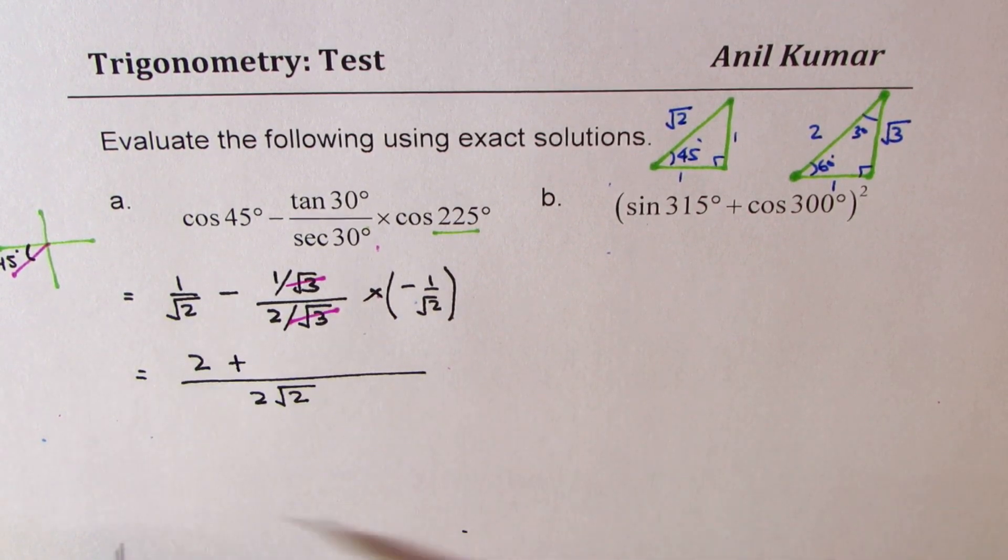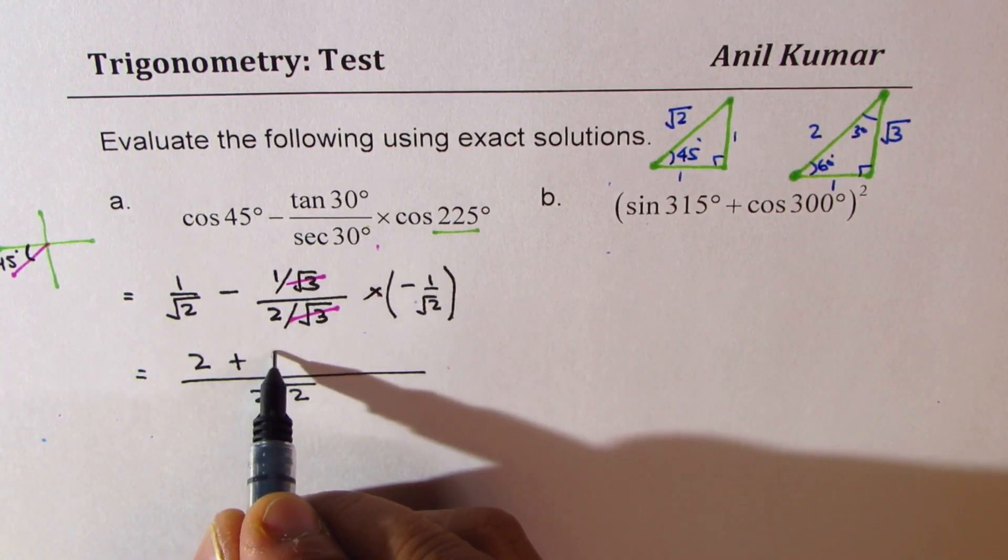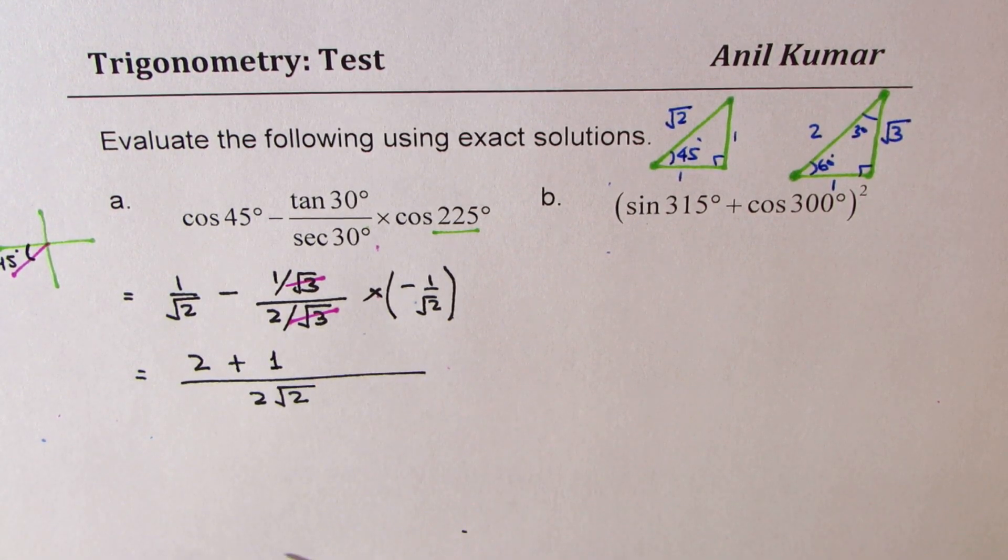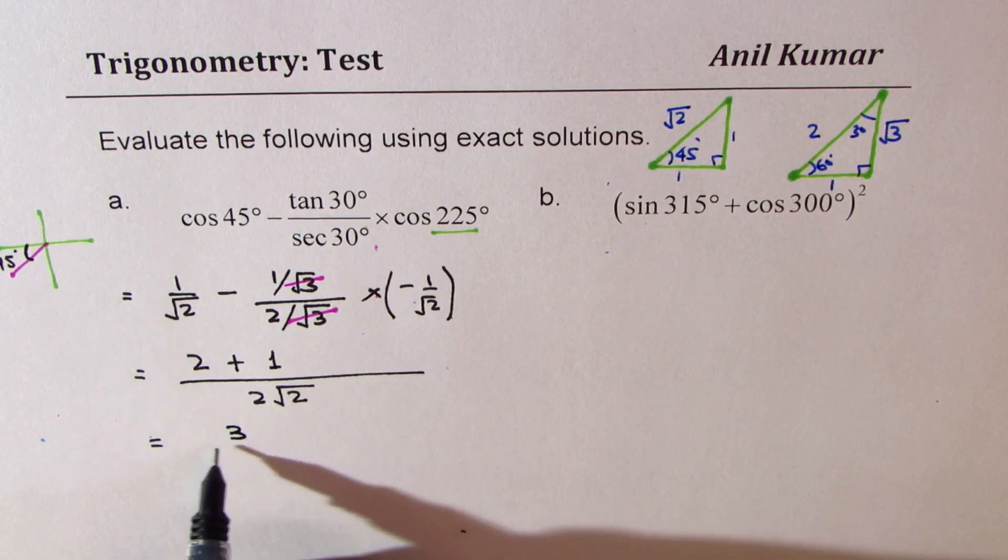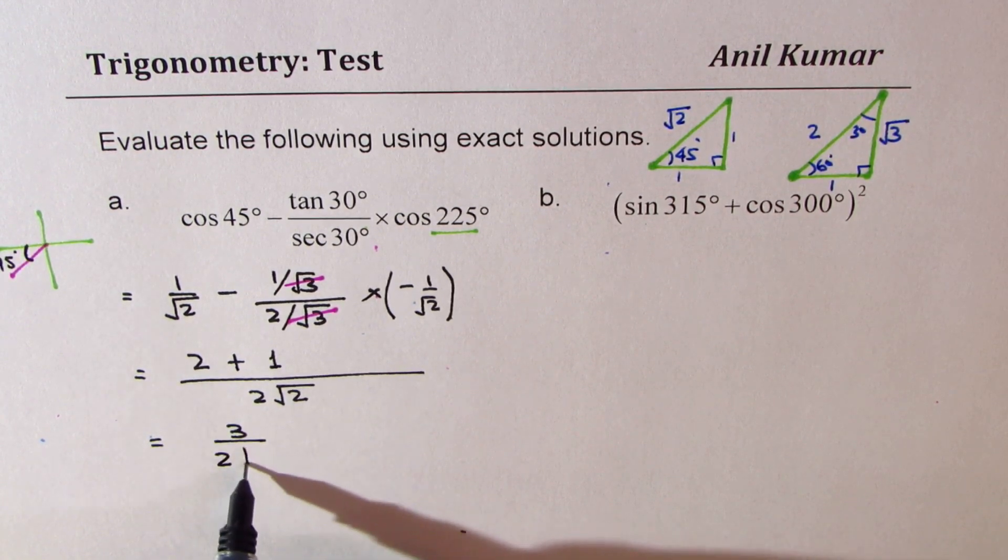So that gives us 3 over 2 square root 2.